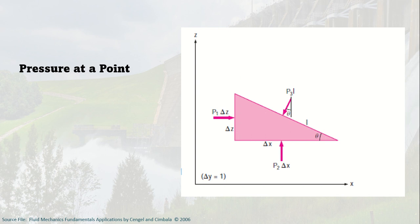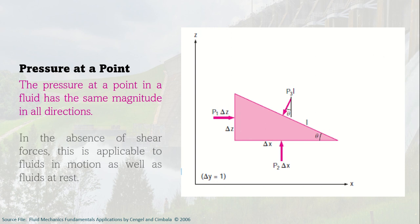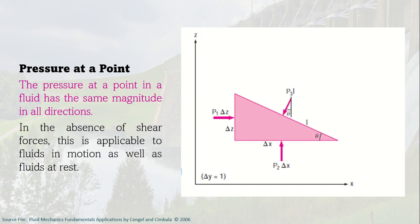For pressure at a point, say we have a very small point in a liquid — the pressure at a point in a fluid has the same magnitude in all directions. For a particular element, the pressure at all points has the same magnitude regardless of direction, whether horizontal, vertical, or inclined. In the absence of shear forces, this is applicable to fluids in motion as well as fluids at rest.